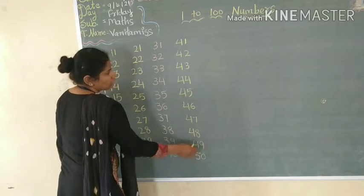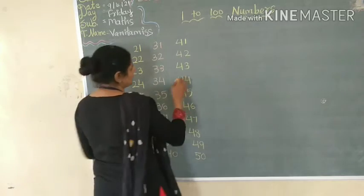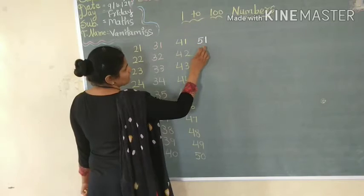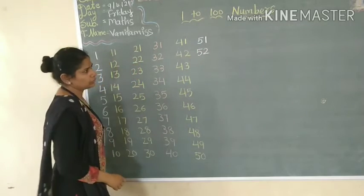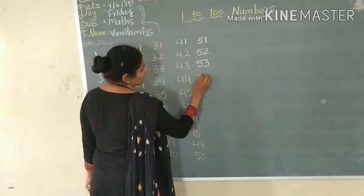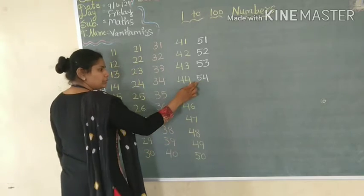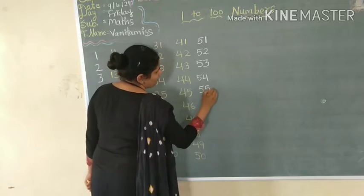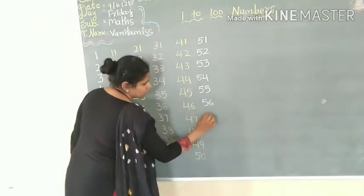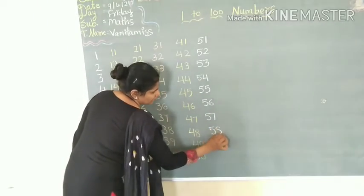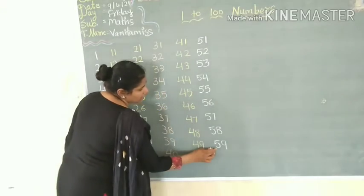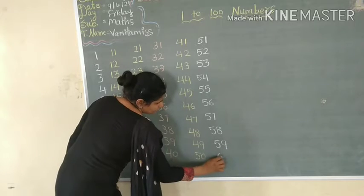After 50, which number comes? 51. Then the next number is 52. And after 52 is 53. After 53 is 54. Then after 54 is 55. After 55 is 56. And after 56 is 57. After 57 is 58. And after 58 is 59. Then 60.